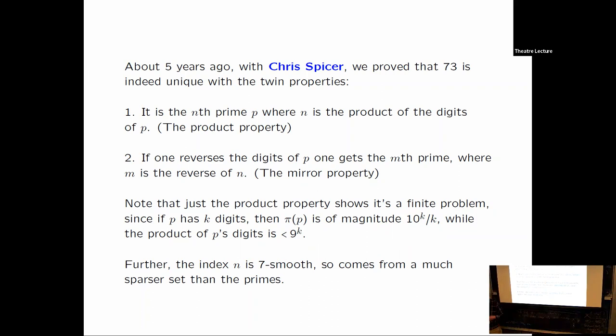Now as most calculus students can tell you, 10 to the k over k goes to infinity faster than 9 to the k. And so the two quantities would not be equal once k is big enough. So that's a proof that there are only finitely many. If you work out what the crossover is when this starts saying that it can't be, maybe if you do that the right way, it turns out that you only have to look at primes up to about 10 to the 47. You just have to enumerate them and you're done. But we didn't do that.